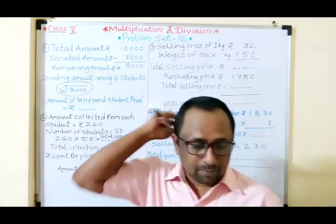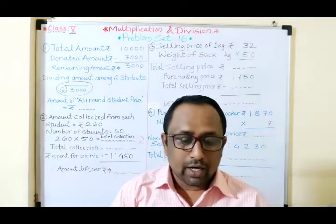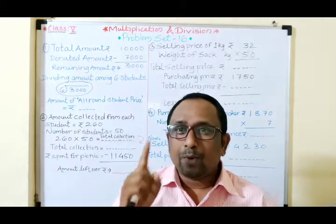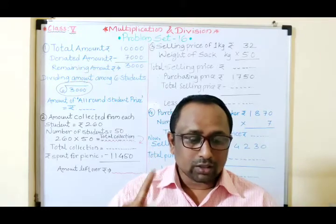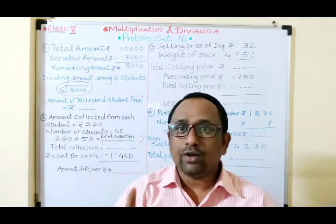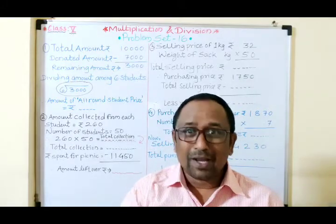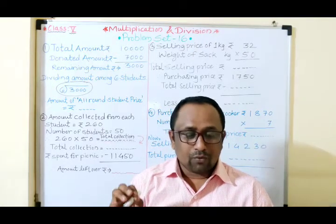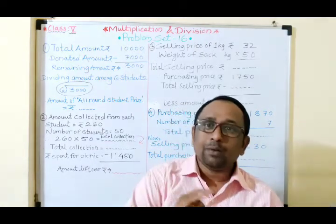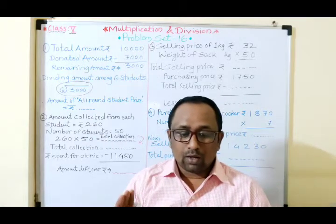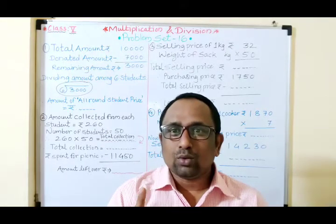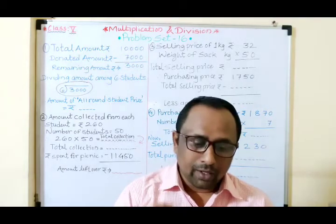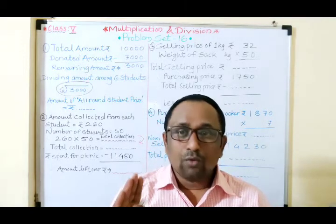Now we move to the second example. An amount of ₹260 each was collected from 50 students for a picnic. So every student contributed ₹260, and the total number of students is 50. If ₹11,450 were spent for the picnic, what is the amount left over? First we need to find the total amount collected.